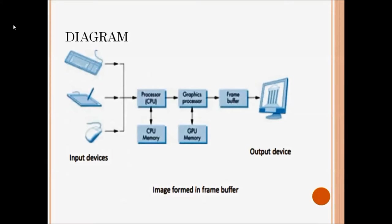Along with the input devices I need a processor. I am going to use two types of processors: the central processing unit (CPU) and the graphics processor. The CPU can do both normal tasks and graphics tasks. The graphics processor is a special type of processor tailored to do graphics-specific tasks. Both CPU and graphics processor have their own memory.